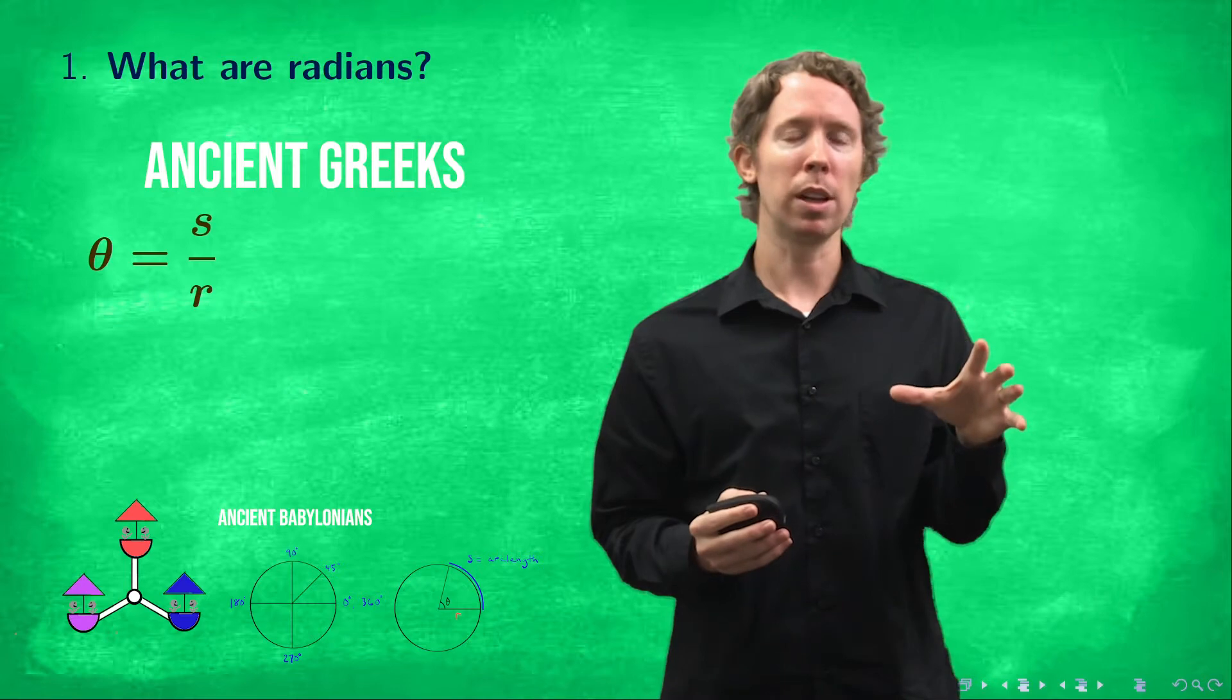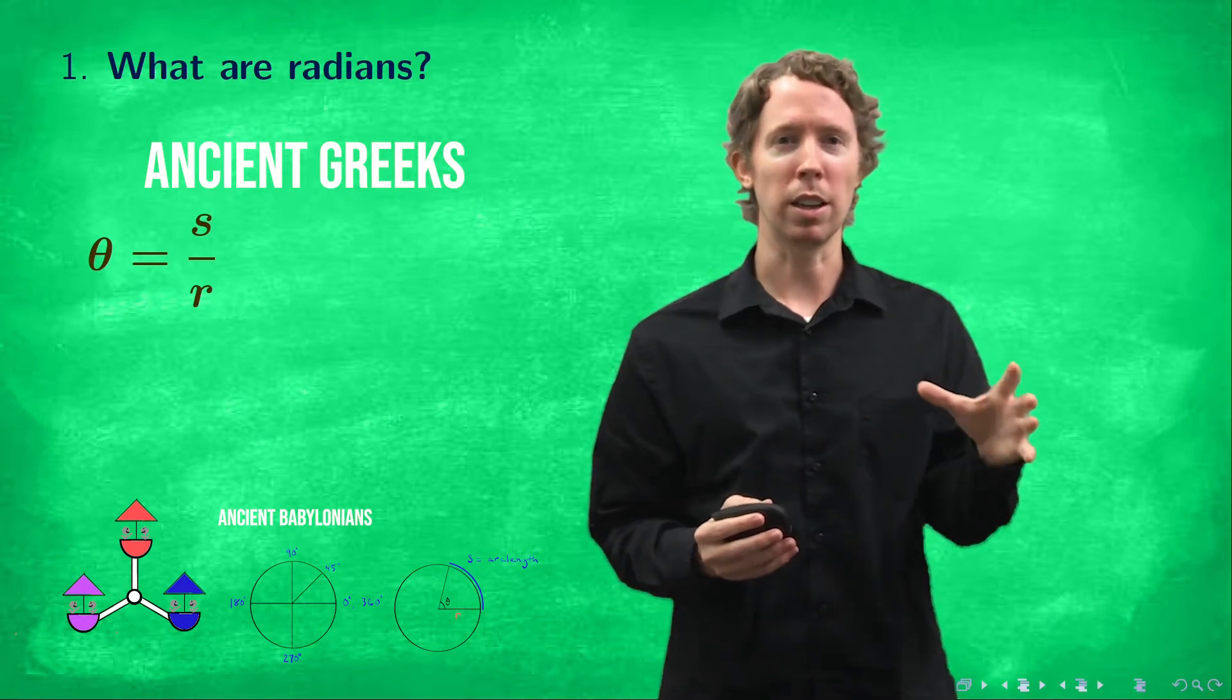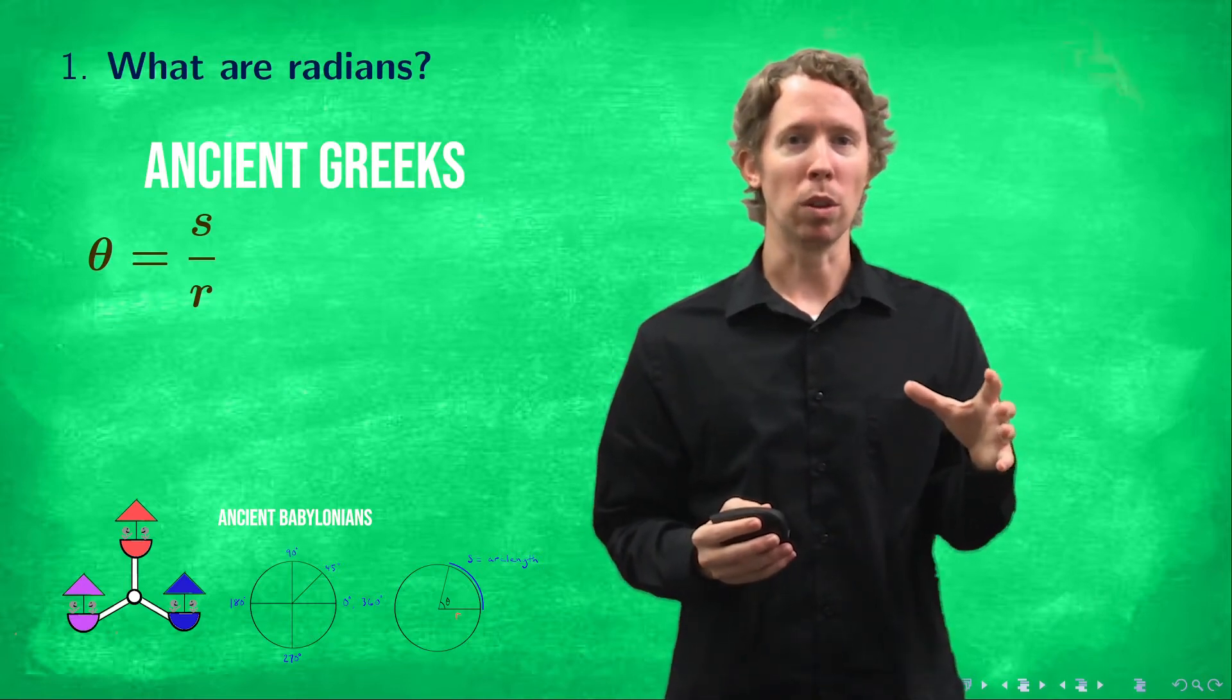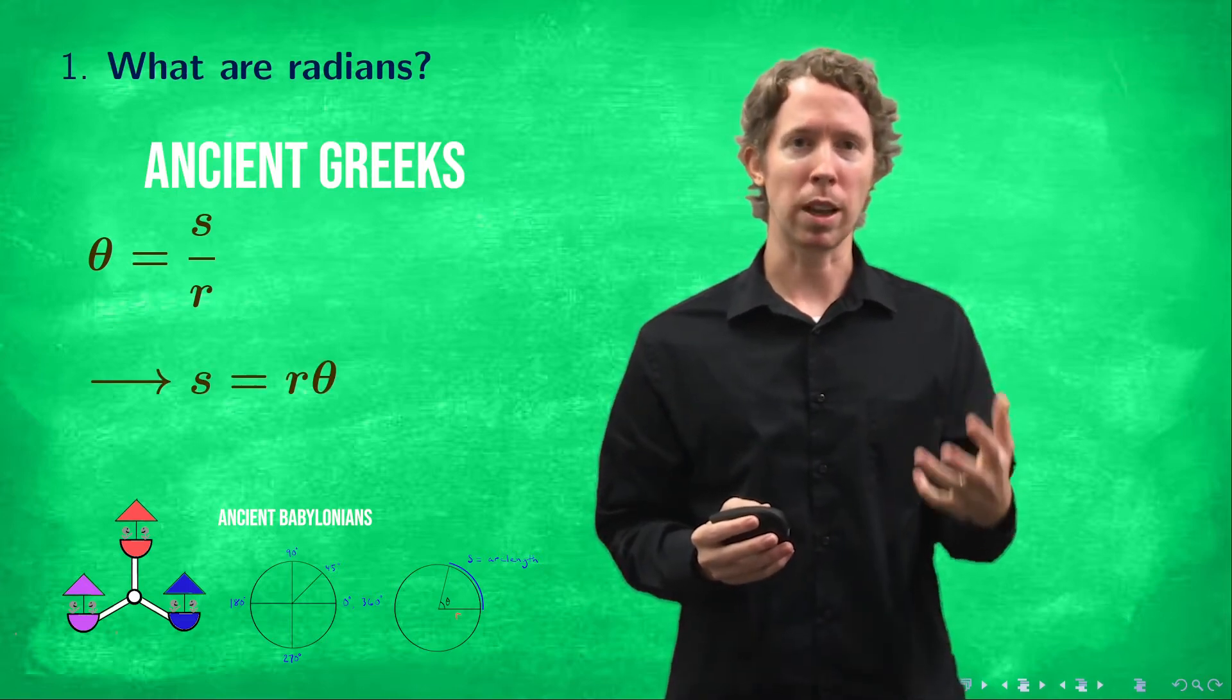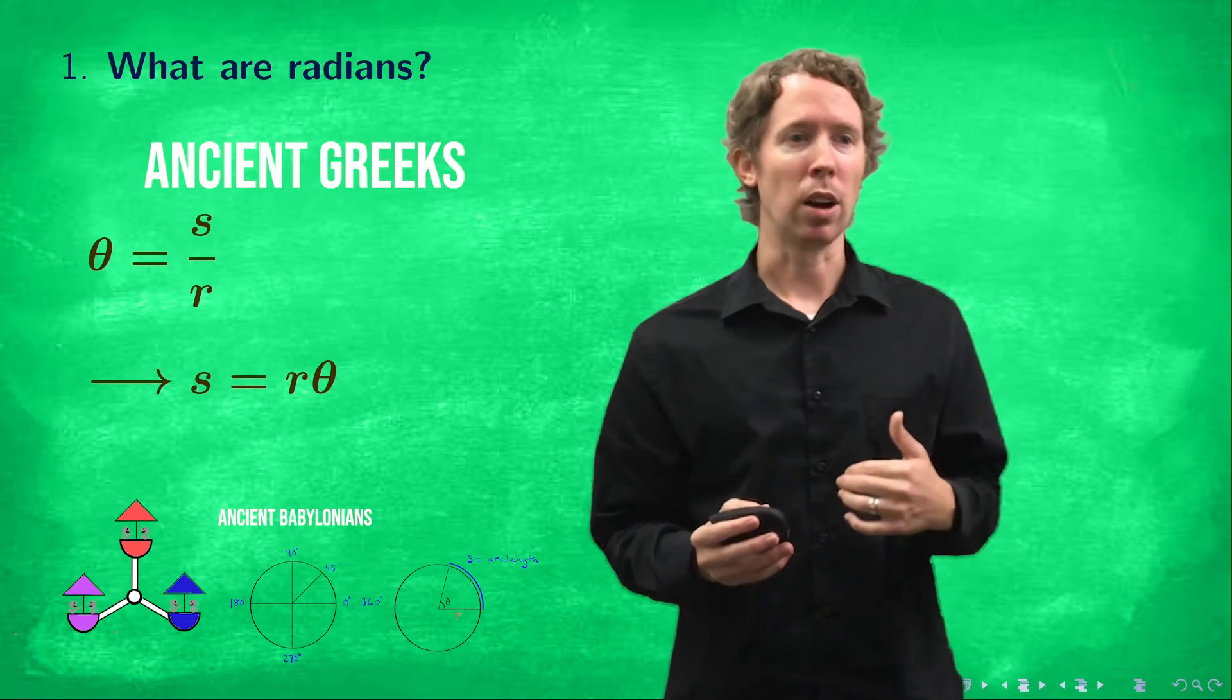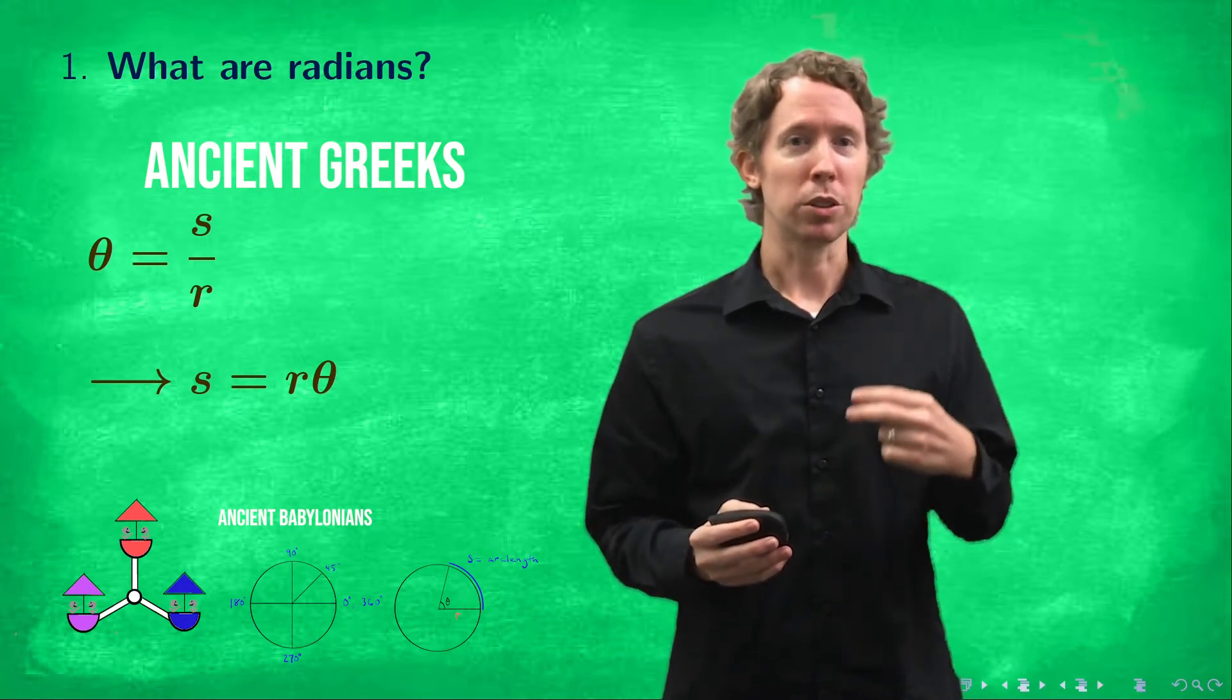I want to hold on to this formula but I want to hold on to it in a slightly different form. So let's multiply both sides of this equation by r and we'll get s equals r times theta. That's how we'll hang on to it. So that's radians.